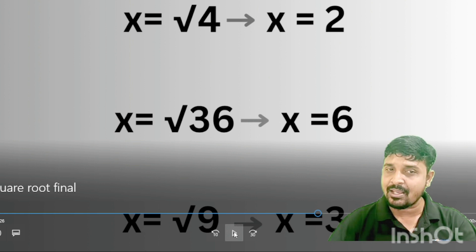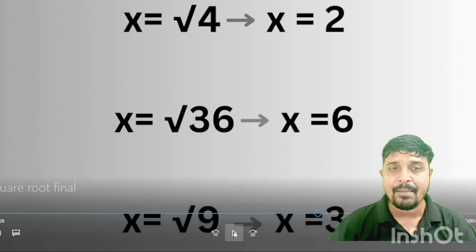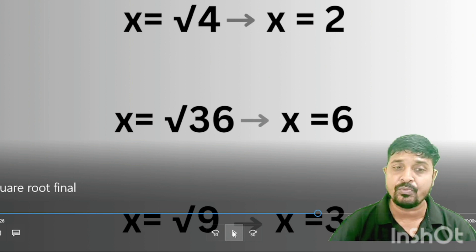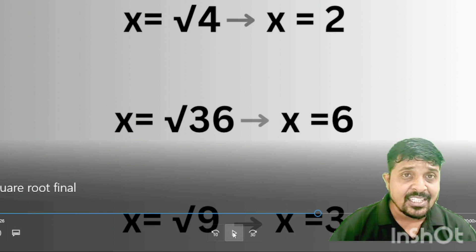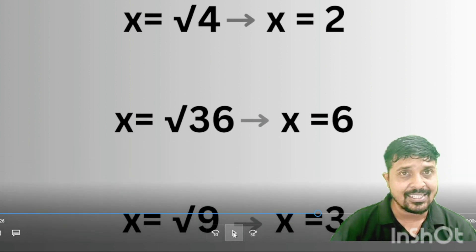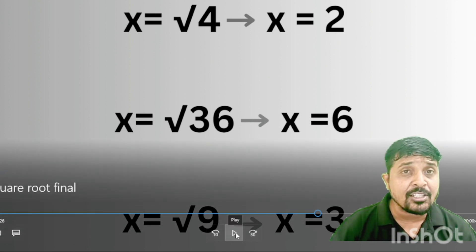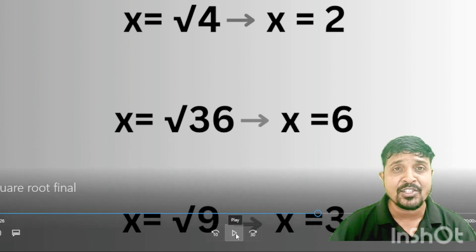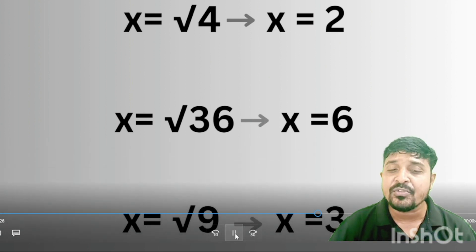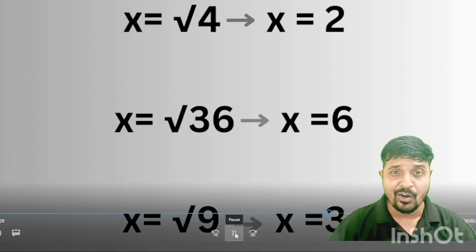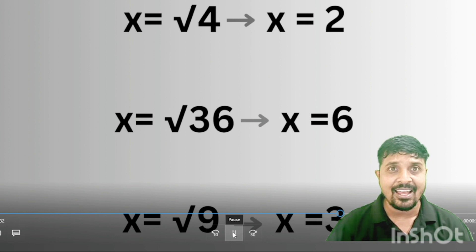By this we can take several examples. If x equals root 4, then x equals positive 2. If x equals root 36, then x equals positive 6. If x equals root 9, then x equals positive 3. In all three cases, you cannot take the negative values as the answers.